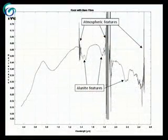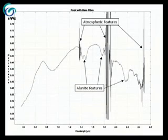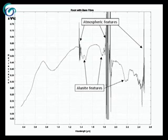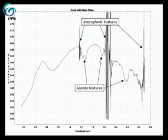Here you see a typical reflectance spectrum of this target outcrop. Three distinct absorption features in the shortwave infrared tell us that the main spectrally active mineral is alunite. The trough at 0.9 micron is caused by iron oxides.